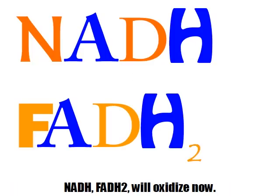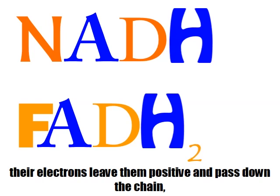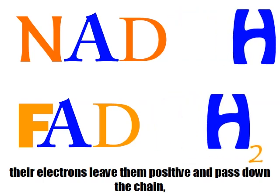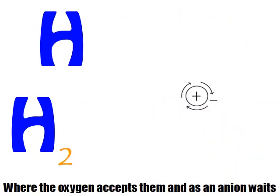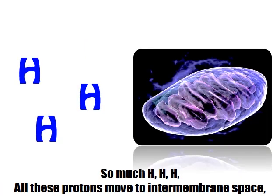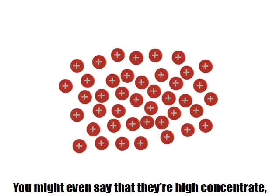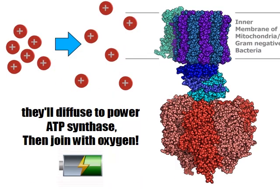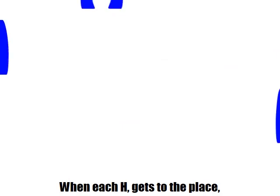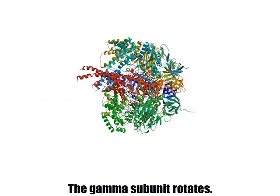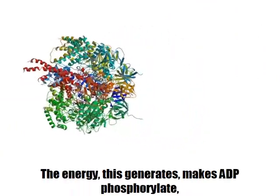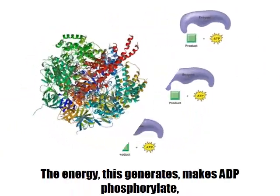NADH and FADH2 will oxidize now. Their electrons leave them positive and pass down the chain, where oxygen accepts them. With so much H, all these protons move to the intermembrane space. You might even say that they're high concentrate, so they'll diffuse to power ATPs. Then each H gets to the place, the gamma subunit rotates, the energy degenerates, makes ADP phosphorylate.